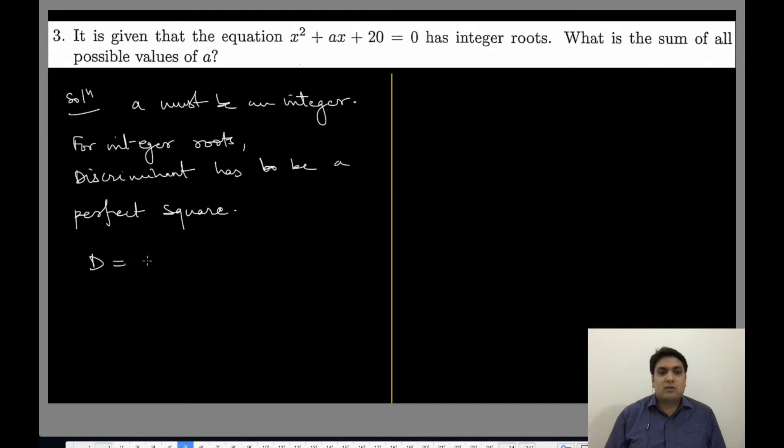What is the discriminant? It is b² - 4ac. For this case, it will be a² - 4(1)(20), so this is a² - 80. Let's assume a² - 80 equals t², because it is a perfect square.